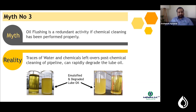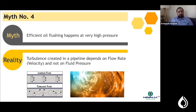Myth number three: oil flushing is redundant if chemical cleaning has been performed properly. At multiple sites, chemical cleaning was carried out by the contractor but lube oil flushing was ignored. As a result, traces of water and chemicals used during chemical cleaning were left in the pipelines. As soon as the lubrication system was started, the lube oil was immediately contaminated, permanently degrading it.